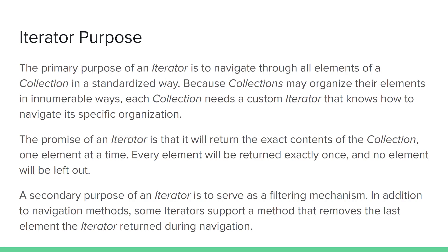The promise of any iterator is that it will return the exact contents of its given collection one element at a time. Every element should be returned exactly once — no element will be left out or repeated. A secondary purpose of an iterator is that it can serve as a filtering mechanism. Some iterators support another method that removes the last returned element during its navigation.